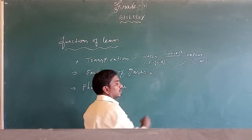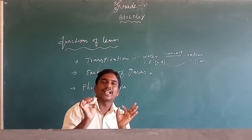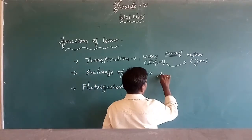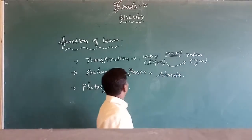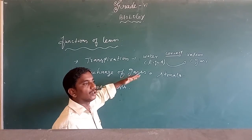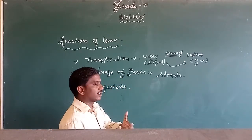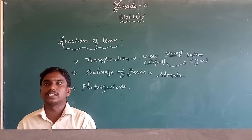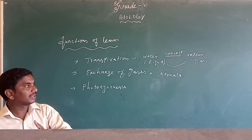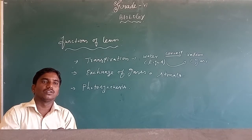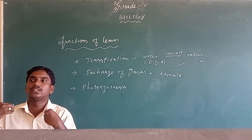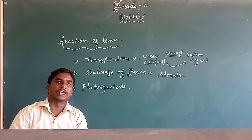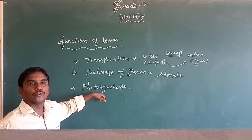The second one is exchange of gas. The leaves have some tiny pore structures that are called stomata. During the photosynthesis time, when leaves prepare food, plants exchange gases — they give out oxygen and take in carbon dioxide.